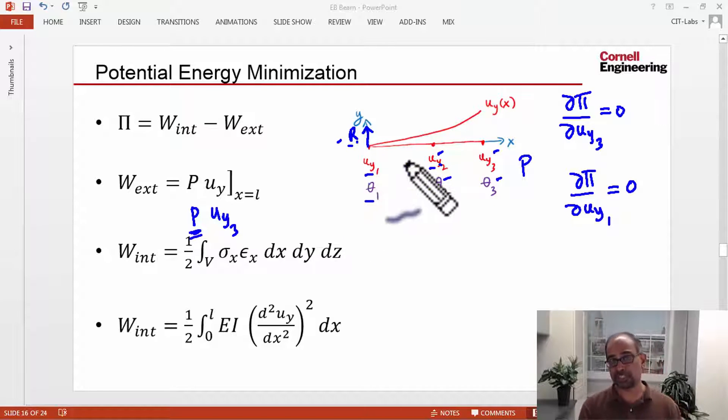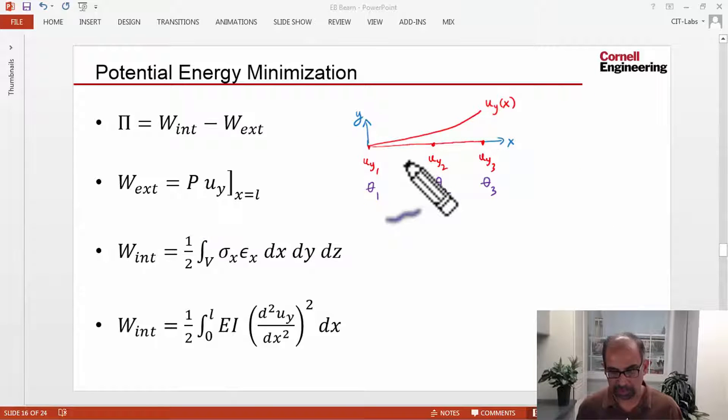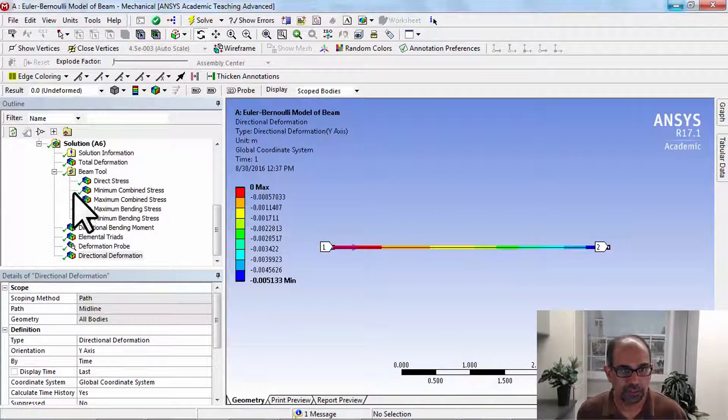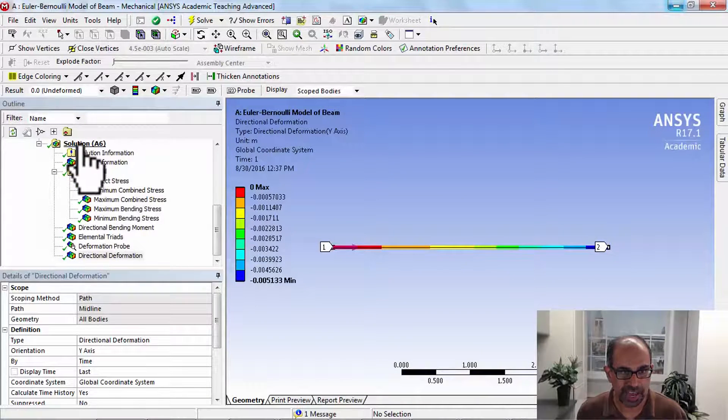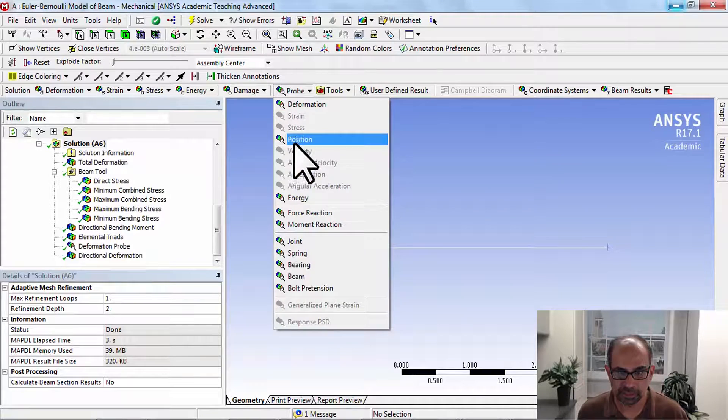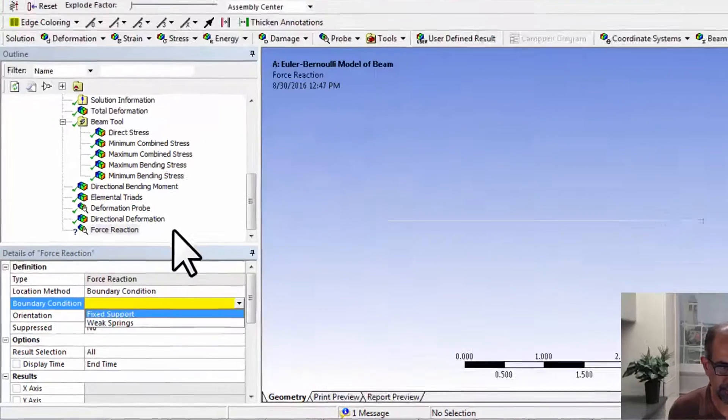If I go to ANSYS and select Solution and Probe Force Reaction, everywhere I have displacement constraints or rotation constraints, I'll get a reaction. Here I have only the fixed support—ignore weak springs—and then let me evaluate that.